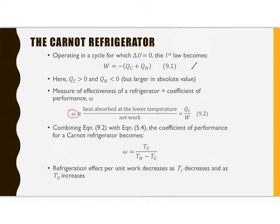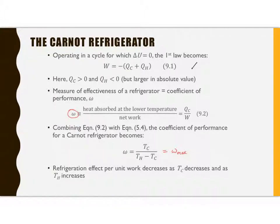The coefficient of performance is going to be greater than 1, so we call it a coefficient of performance, not an efficiency, because efficiency is reserved for values between 0 and 1. Combining this with our definitions from Chapter 5 when we studied the second law, the coefficient of performance for a Carnot cycle can be estimated as TC over (TH minus TC). In general, this is the maximum possible coefficient of performance. The refrigeration effect per unit work is going to decrease as TC decreases and TH increases.